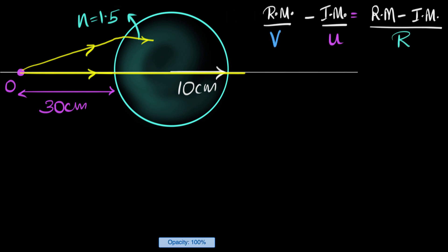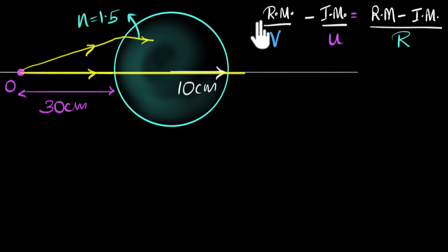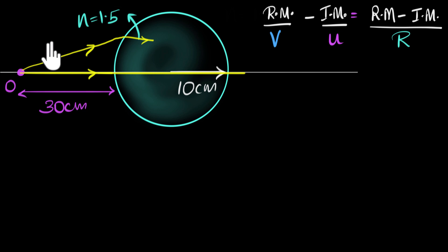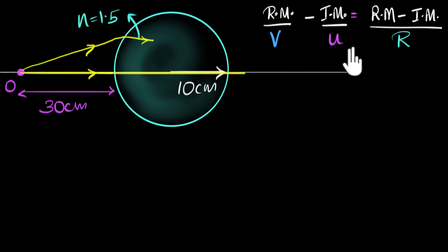We have derived this formula in a previous video. Rm is the refractive index of the medium that contains the refracted ray, Im is the refractive index of the medium that contains the incident ray, and u, v, and r are the object distance, image distance, and the radius of curvature.